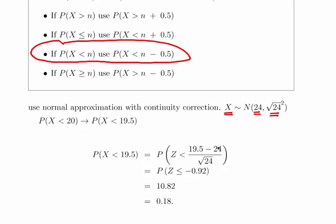We're going to use the Poisson mean and the Poisson variance as our estimates for the normal mean and the normal variance. I have it written there as the square root of 24 squared just to emphasize the standard deviation.